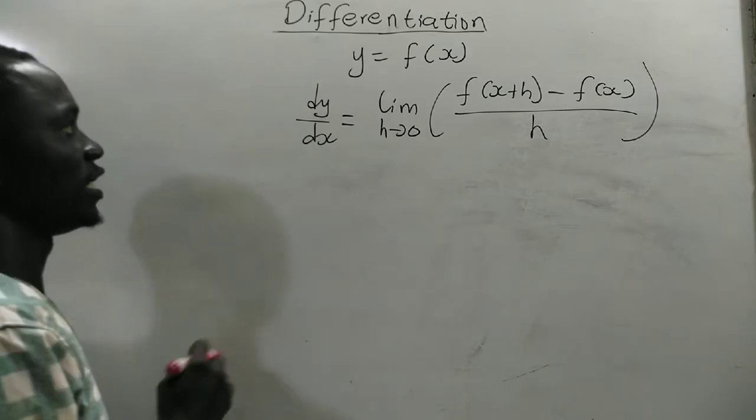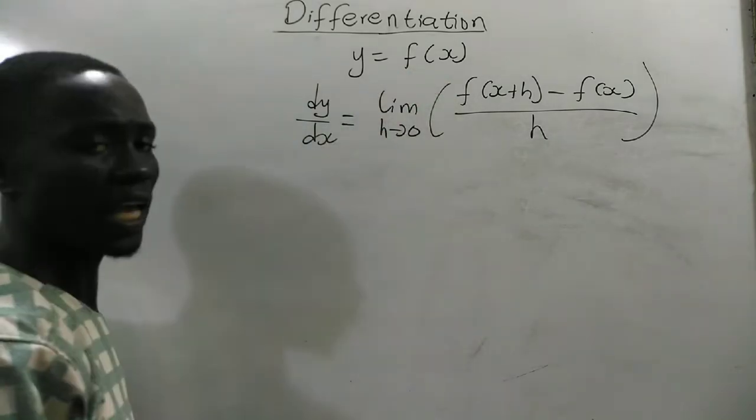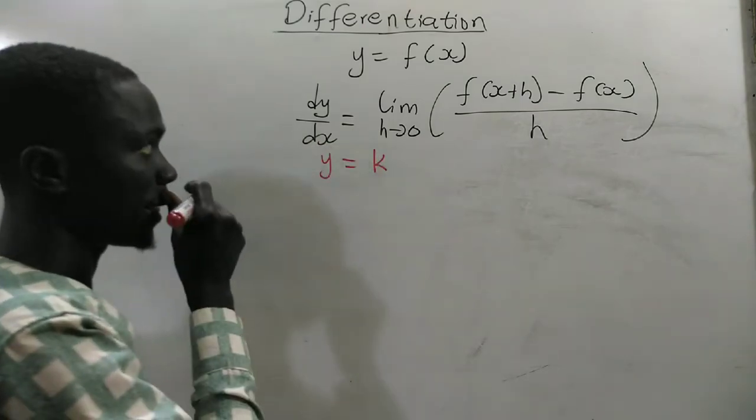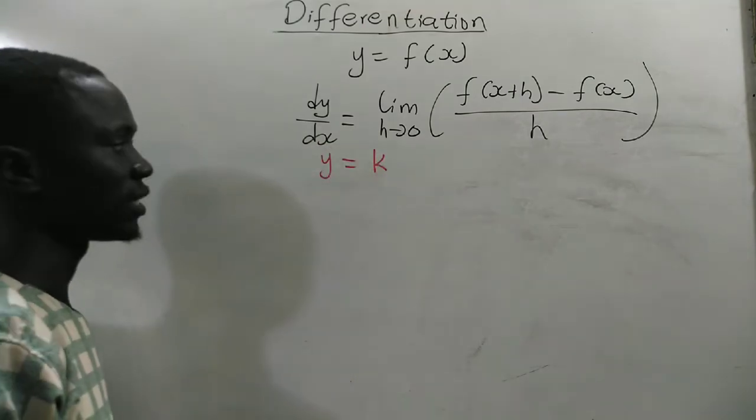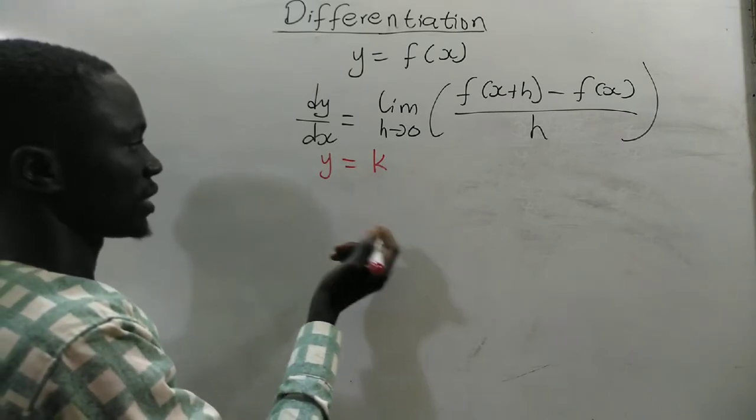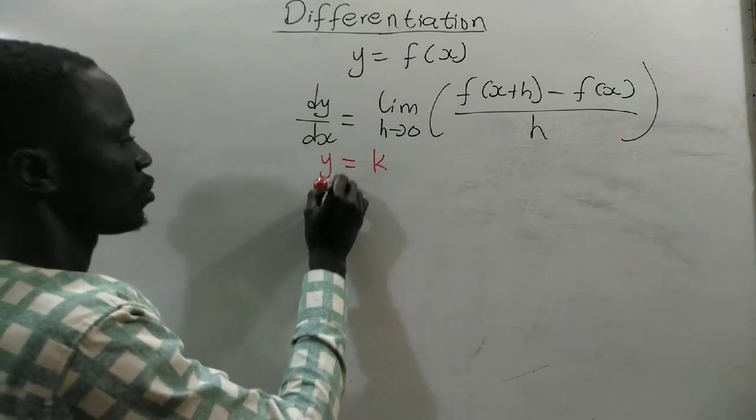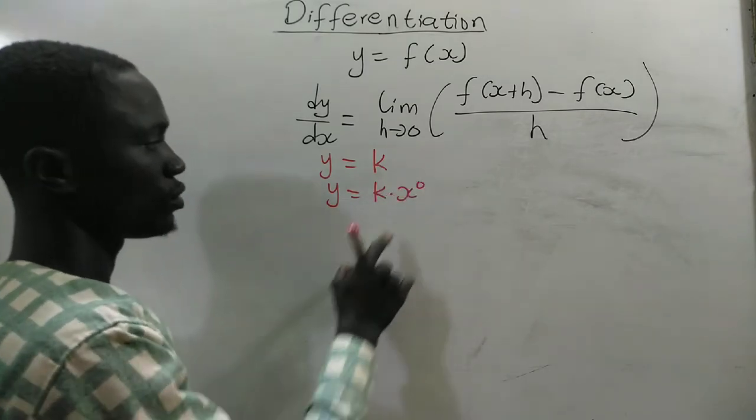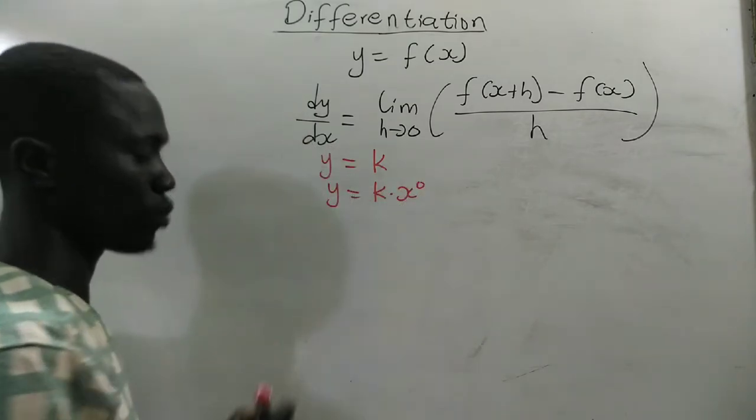Now, if you represent f of x by a constant k, that is, if you have y equal to k, where k is a constant, then this expression, or this function, can be written as y equal to k times x to the power 0, because x exponent 0 is 1.